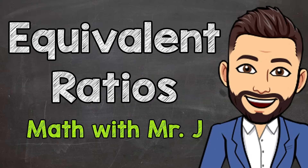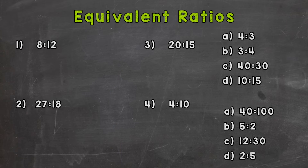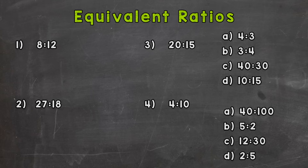Welcome to Math with Mr. J. In this video I'm going to be covering equivalent ratios. As you can see on your screen we have four problems or examples that we're going to go through together. On the left side, numbers 1 and 2, we're going to find a few equivalent ratios for each. On the right side, numbers 3 and 4, we're going to pick out the equivalent ratios out of the choices A, B, C, and D.